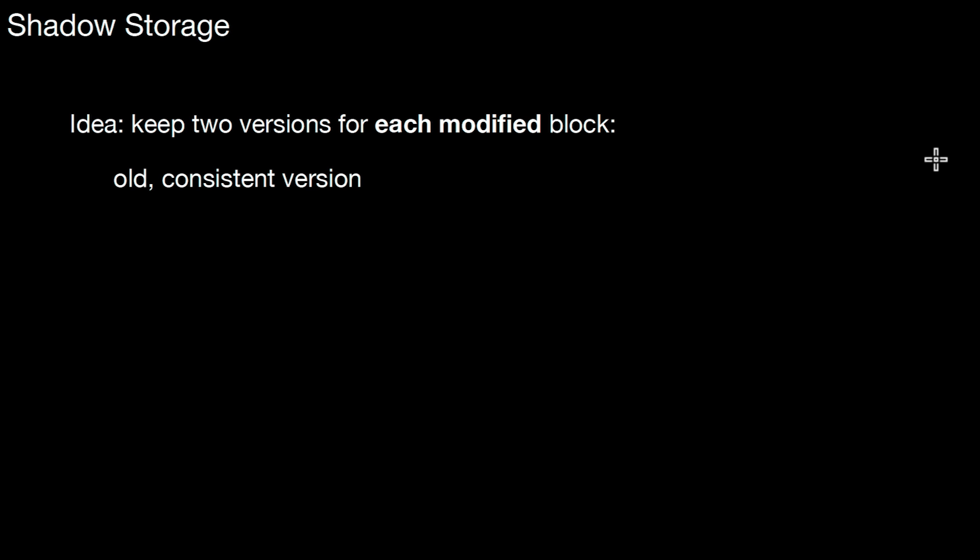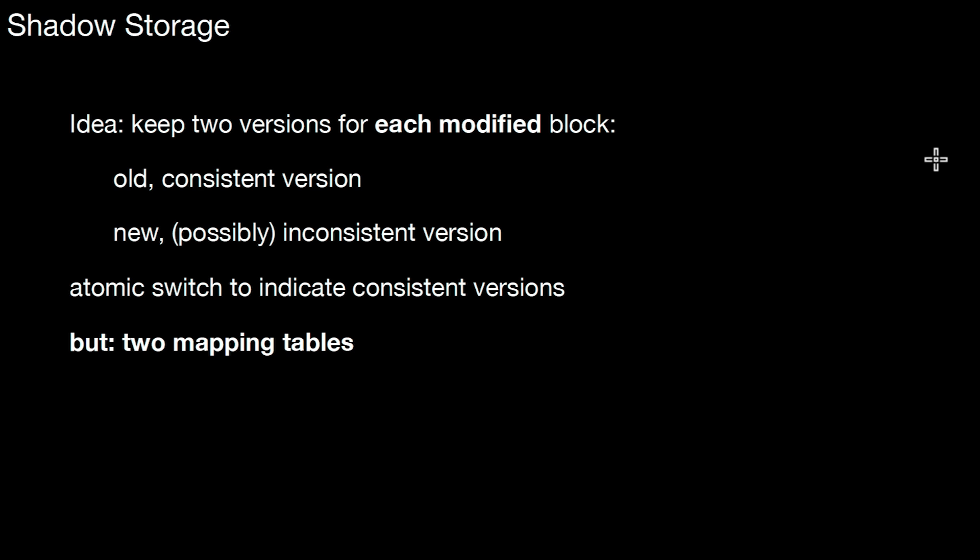Again, as in TwinBlock, there's an old consistent version and there's a new, possibly inconsistent version. As in TwinBlock, we have an atomic switch to indicate the currently consistent version. But, in addition, we also need two mapping tables.